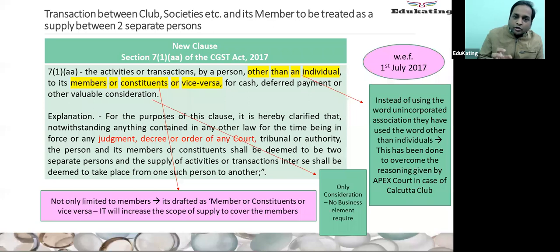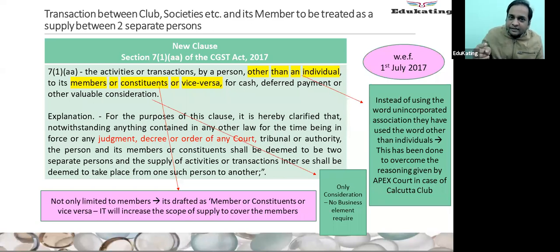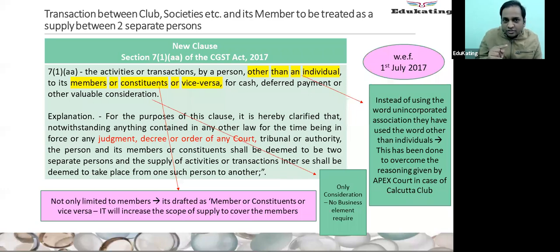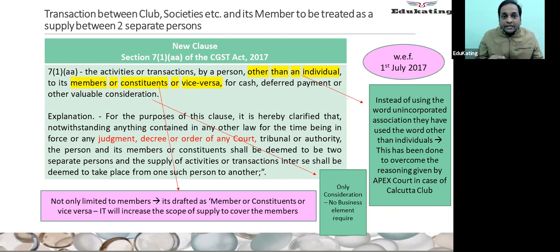A new clause has been inserted in the supply definition. Supply has been defined in Section 7 of the CGST Act. Earlier there were four clauses: Section 7, Subsection 1, Clause A, Clause B, Clause C and Clause D. From 1st February 2019, when the GST Amendment Act 2018 was made effective, Clause D was retrospectively deleted.